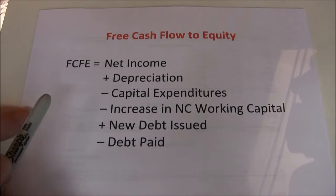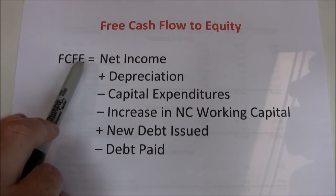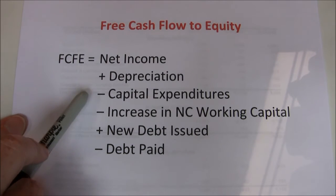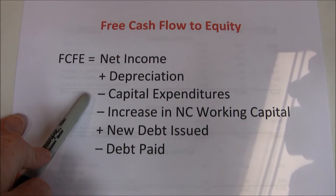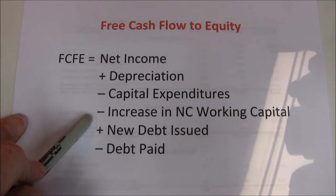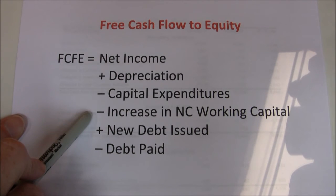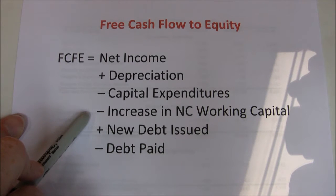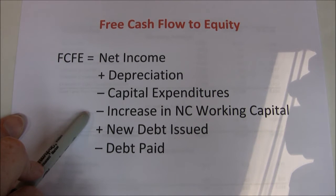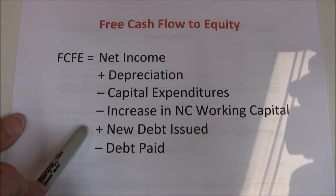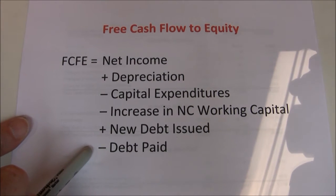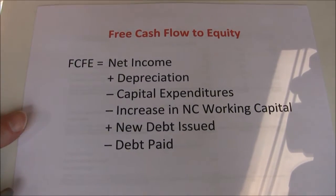Let's go back to free cash flow to equity. Remember that starts with net income, adds back depreciation because it's not a cash expense. What we're paying for is our actual capital expenditures, so we've got to pull those out. Any increase in accounts receivable or inventory lowers our cash flows. On the other hand, if we increase accounts payable that increases our cash flow, so we have to adjust for net working capital. We also have to look at changes in debt — any new debt issued is a positive cash flow for equity, any debt paid off is a negative. This is our basic formula for calculating free cash flow to equity.